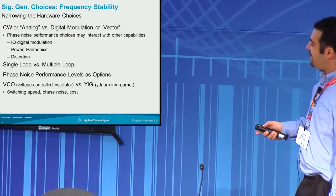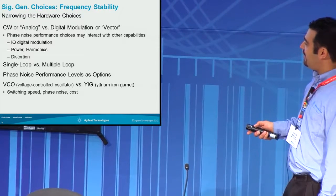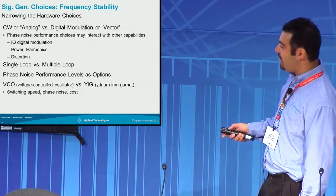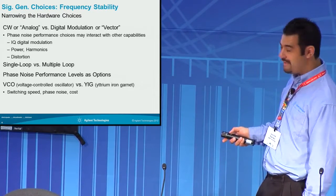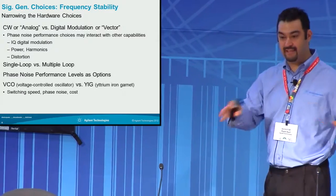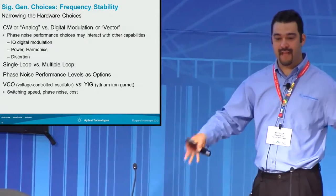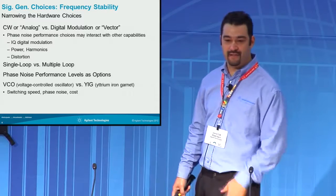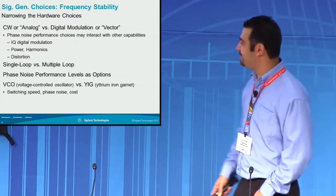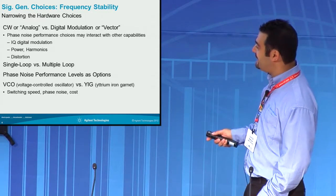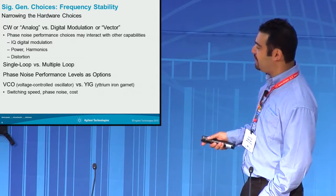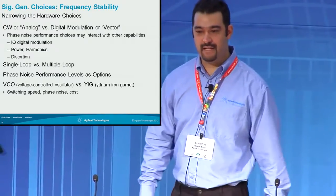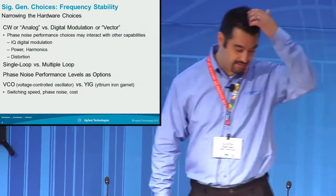Phase noise performance levels can be achieved with either a VCO — voltage controlled oscillator — or a YIG. That determines the roll-off in the pedestal region at those 100 kilohertz to one megahertz offsets. If you have a YIG, it usually affects switching speed, so there are trade-offs with speed in the signal generator.